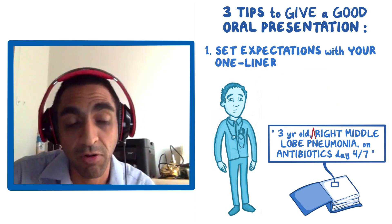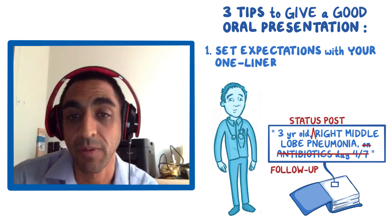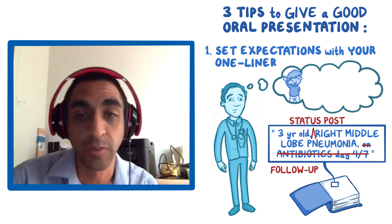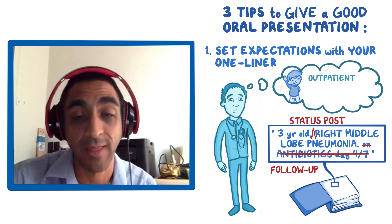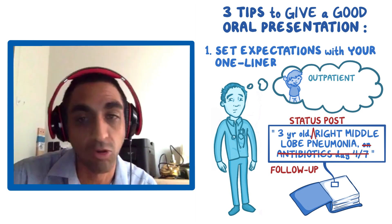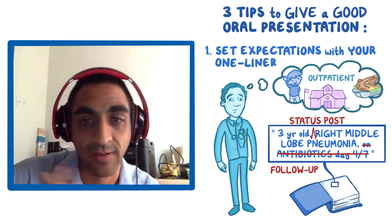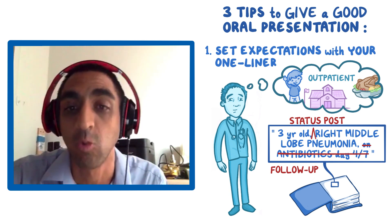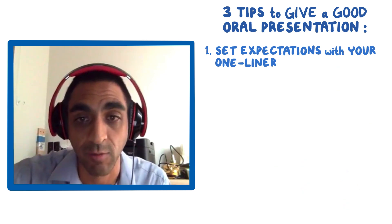What about this: a three-year-old status post right middle lobe pneumonia three weeks ago, here for follow-up. That's a different one-liner. I'm expecting this patient is totally well, should be really happy, probably outpatient, no residual symptoms — back to school, eating well, mom and dad think they're doing great. So that's what you do with your one-liner: set expectations so the listener is thinking what you want them to think about what the patient is doing.